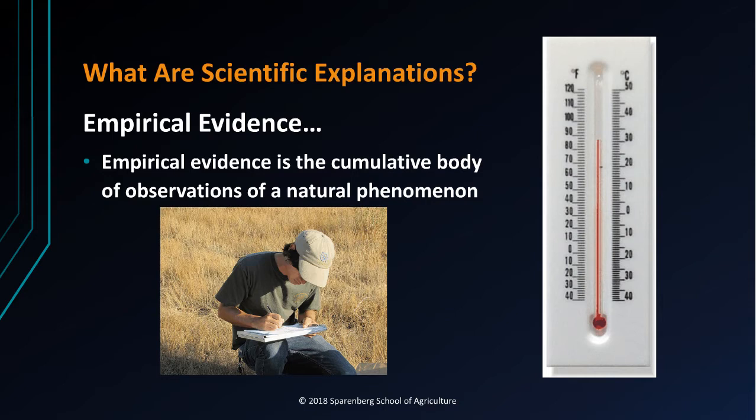Empirical evidence is the cumulative body of observations of a natural phenomenon. Science is limited to phenomena people can observe, with or without instruments to aid observation. Empirical evidence is the basis for scientific explanations.